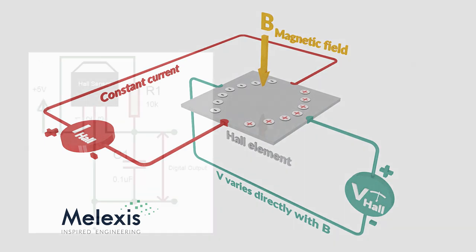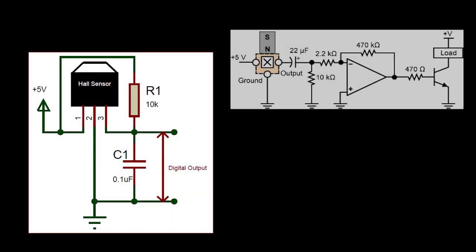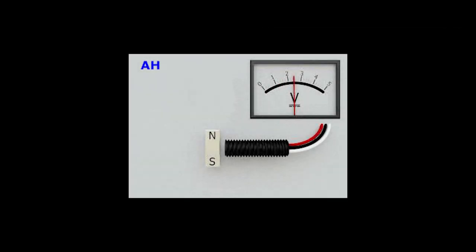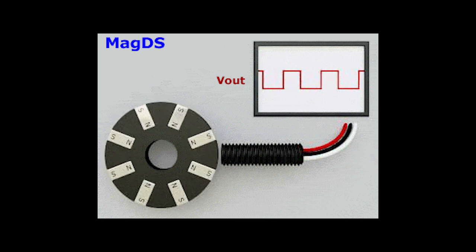Since the electrical difference is so small, operational amps are used to boost the signal. Those same op-amps are used to either make these Hall effect sensors analog where the output of the voltage is proportional to the magnetic field, or digital in which it's either on or off.